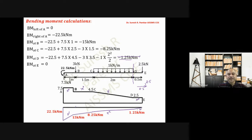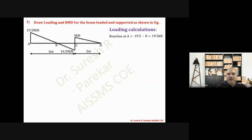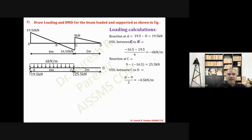For the last problem, we draw the loading diagram and BMD. Loading calculations: reaction at A = 19.5 kN. UDL between A to C: (−16.5 − 19.5) / 6 = −6 kN/m. Reaction at C = 9 − (−16.5) = 22.5 kN. UDL between C to D: (0 − 9) / 2 = −4.5 kN/m.